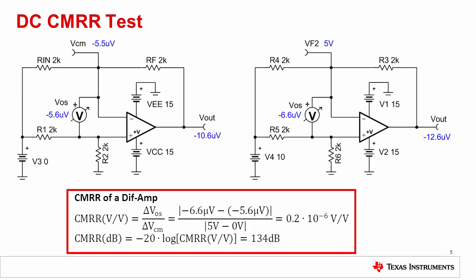This slide shows a simulation of the DC CMRR test circuit. The input signal ranges from 0 to 10 volts, which translates to a 0 to 5 volt common mode signal. The common mode rejection is calculated as the change in offset over the change in common mode. For this example, CMRR is 0.2 microvolts per volt, or 134 dB. Again, note that the effects of AOL are eliminated because the output is kept nearly constant at 0 volts.